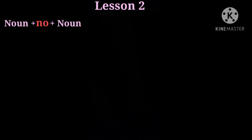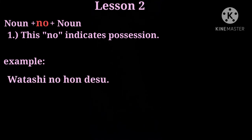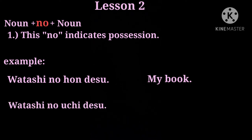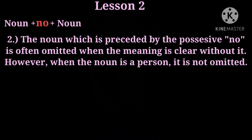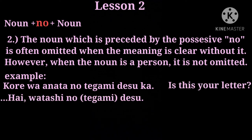Noun plus no plus noun — no indicates possession. Example: Watashi no hon desu means my book. Watashi no uchi desu means my house — uchi means house. The noun preceded by possessive no is often omitted when the meaning is clear, but when the noun is a person it is not omitted. Example: Kore wa anata no tegami desu ka? — Is this your letter? Hai, watashi no tegami desu, or simply Hai, watashi no desu — yes, it is mine.